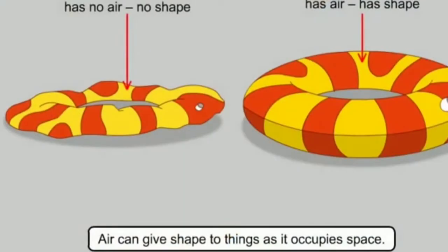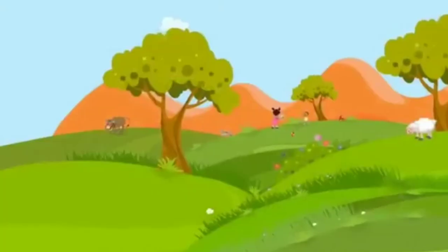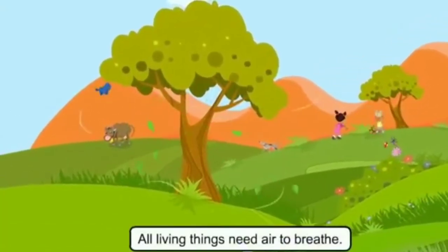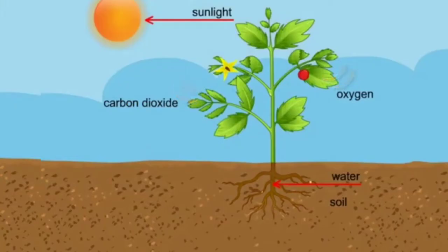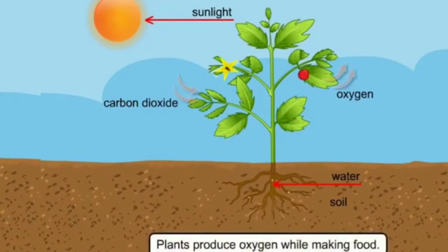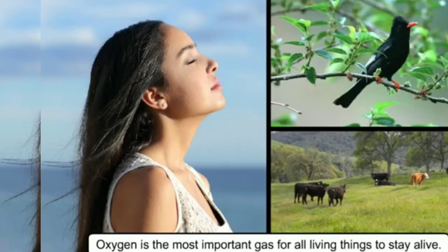Air can give shape to things as it occupies space. Air has weight. All living things need air to breathe. One of the important reasons why we have to grow plants is because plants give us oxygen. Oxygen is the most important gas for all living things to stay alive, and it keeps the air fresh.